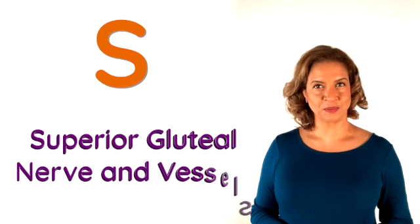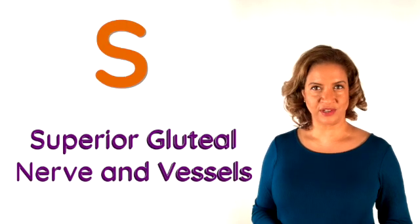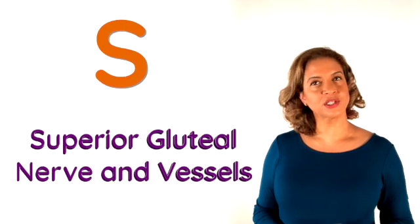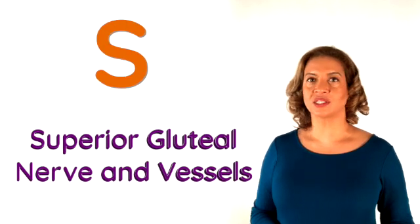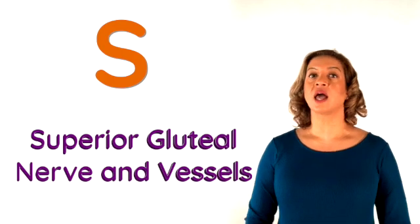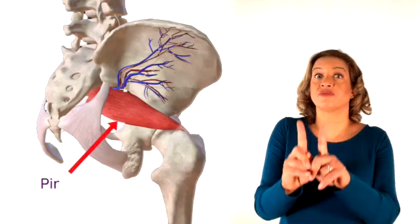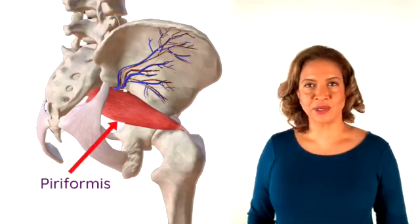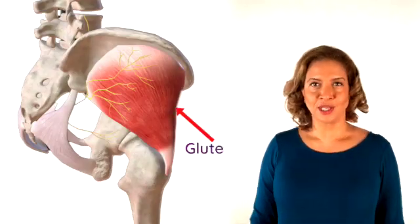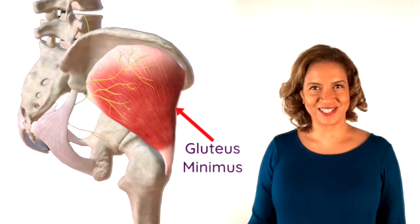And the final S is for the superior gluteal nerve and artery, which is the only structure that actually emerges above the piriformis to supply, as we previously mentioned, gluteus medius and minimus.